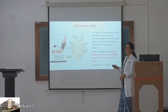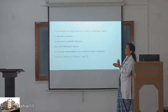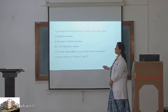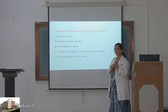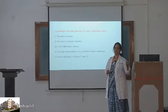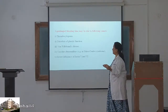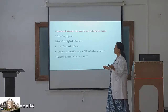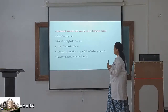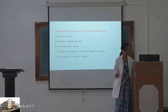Bleeding time is 2 to 8 minutes normally. If prolonged, the causes include thrombocytopenia — which is reduction in the number of platelets (normal platelet count is 1.5 to 4.5 lakhs per cubic millimeter), disorders of platelet function including von Willebrand's disease, vascular abnormalities as in Ehlers-Danlos syndrome, and severe deficiency of factor V or factor IX.